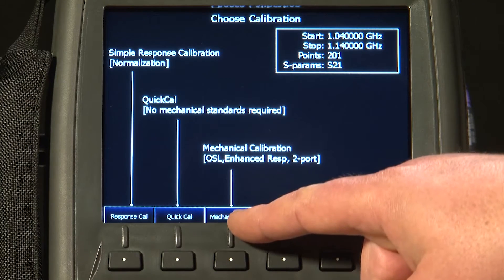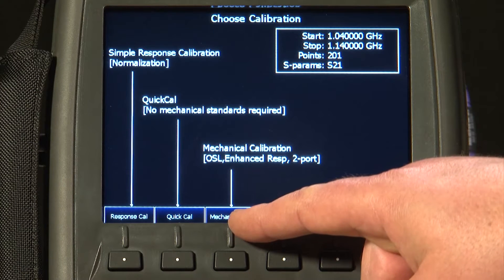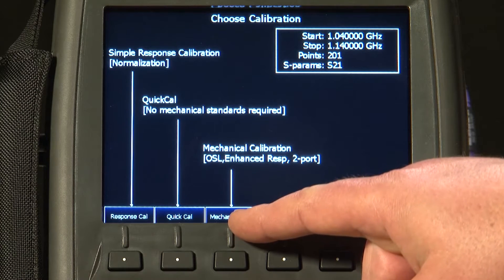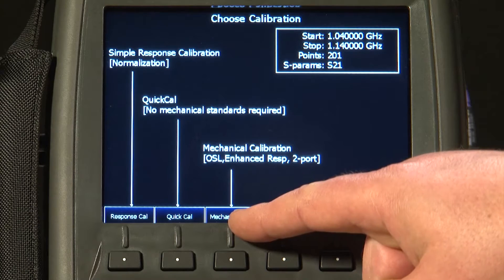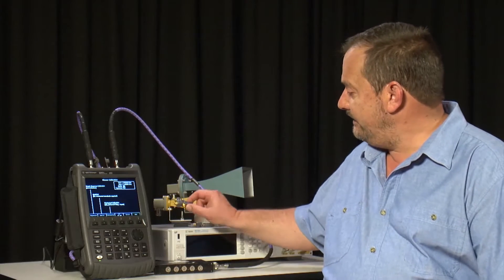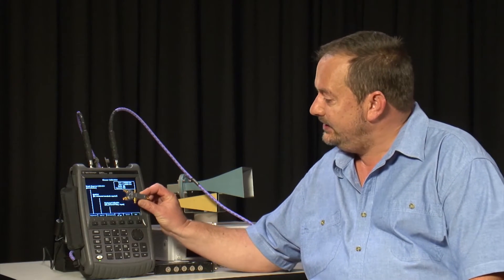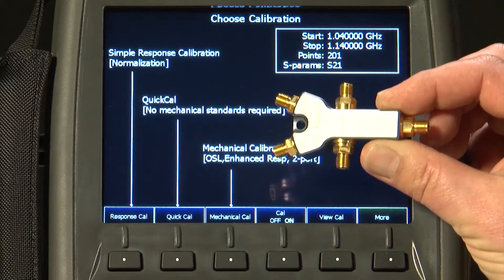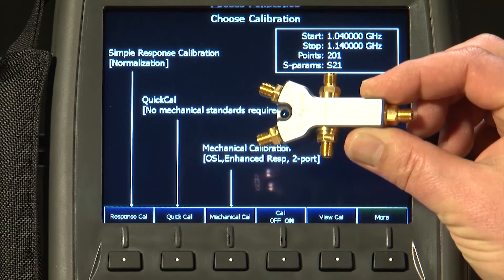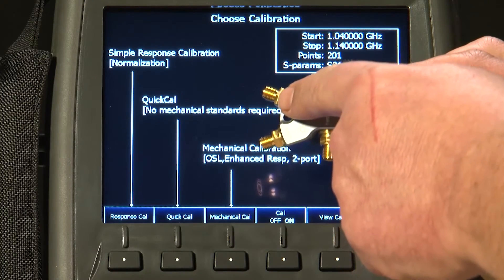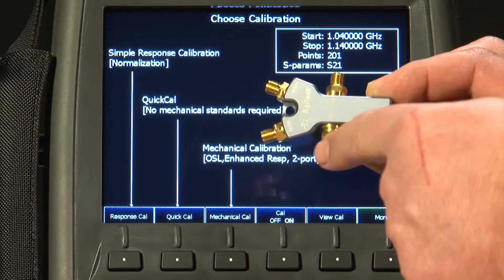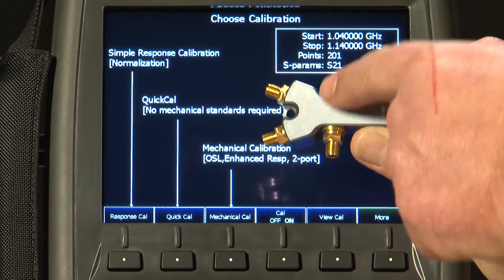but in this instance I have decided to use the Full Mechanical Calibration, that is a short, open, load, through for the ultimate accuracy. And I have used one of these very cute four-way Agilent Cal kits that fit very conveniently in the FieldFox carry bag that have an open, short, a load and a through through these connectors here.